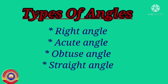Next, types of angles. The main types of angles are right angle, acute angle, obtuse angle, and straight angle. Now we shall go into detail on the different types of angles.